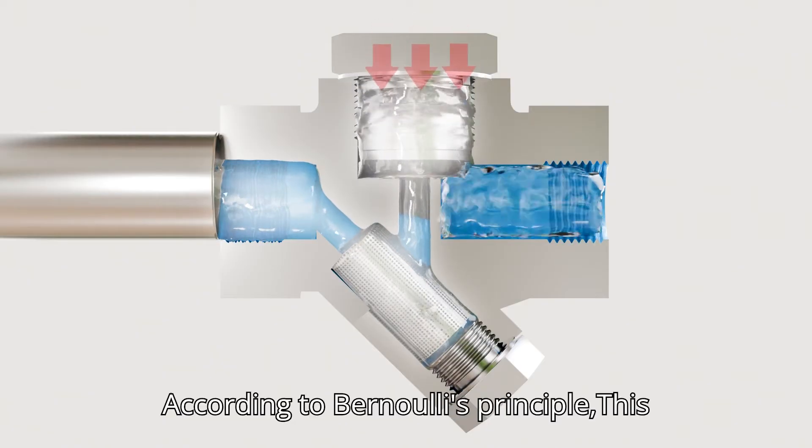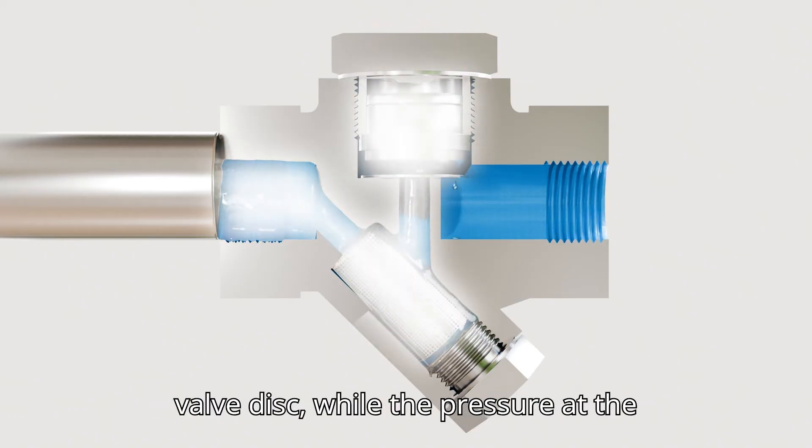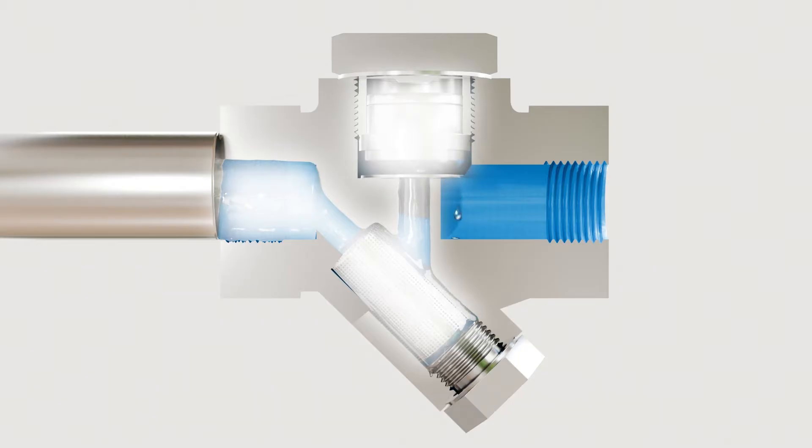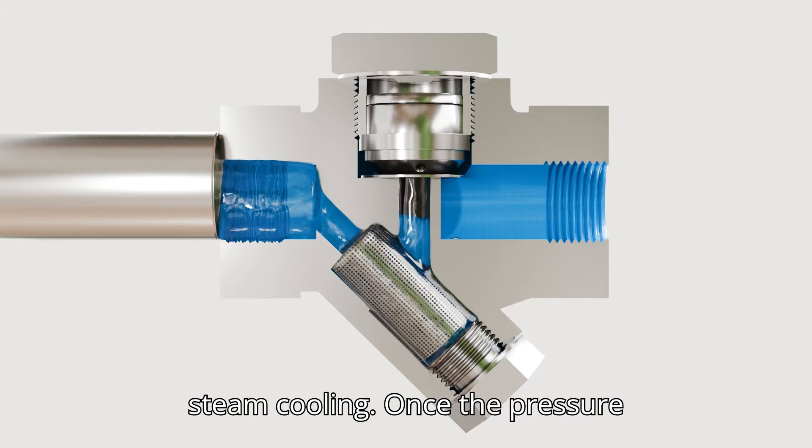According to Bernoulli's principle, this creates a low pressure zone beneath the valve disc while the pressure at the upper end remains higher. As a result, the valve closes when the pressure in the variable pressure chamber drops due to steam cooling.